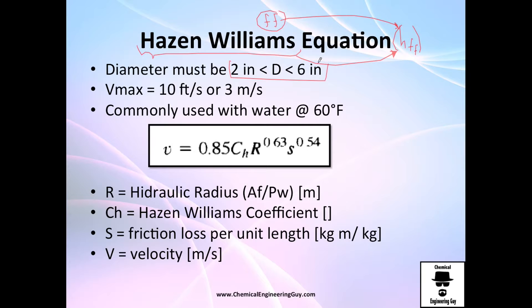The detail on this equation is that you must be operating between 2 inches and 6 inches of pipe diameter. So if you have 1 inch diameter it won't work, 8 inches won't work. The maximum speed that you should operate is 3 meters per second.